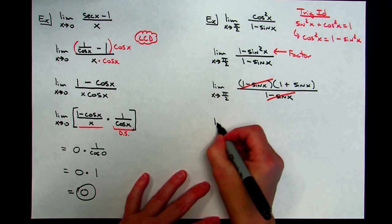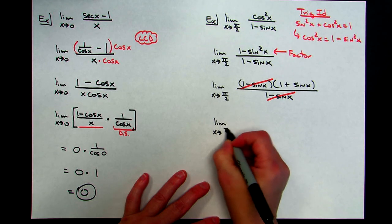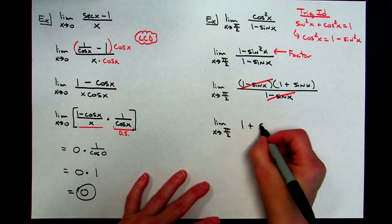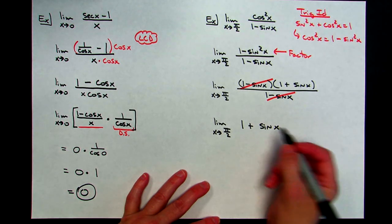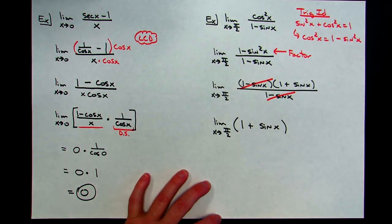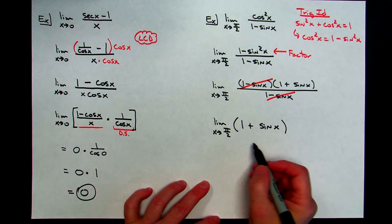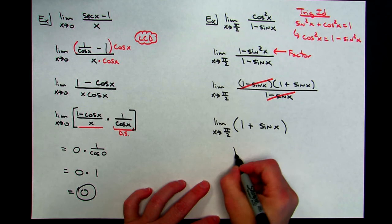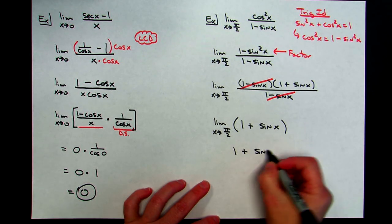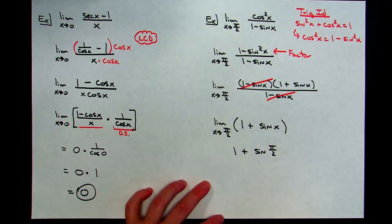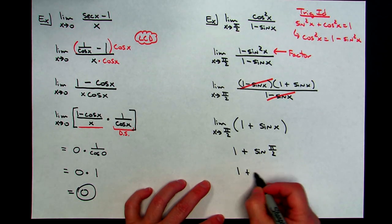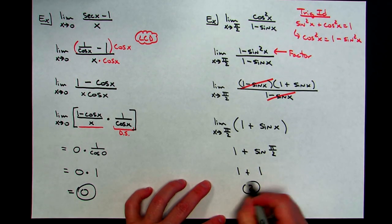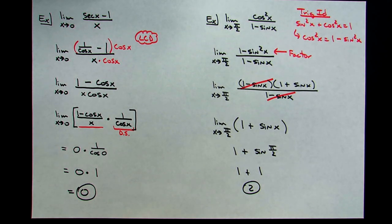Now I'm down to the limit as x approaches pi over 2 of (1 plus sine x). I can simply do a direct substitution. The 1 stays as 1, plus sine of pi over 2, which equals 1. So 1 plus 1 gives me a final limit of 2. Those are just a few of the special trig limits that will help you get through calculating some of these trig limits.